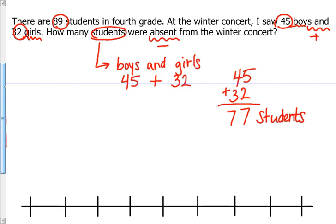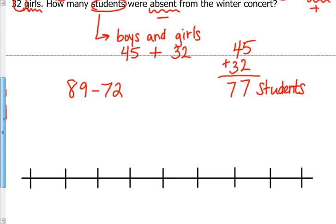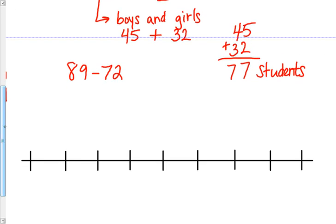There were 77 students. Now the next step is to reread that question again to remind us what we are doing. How many students were absent from the winter concert? We said absent means subtract, so the next step is to subtract 89 minus 72. Some of you can do this with mental math, but we're going to try it with the open number line.